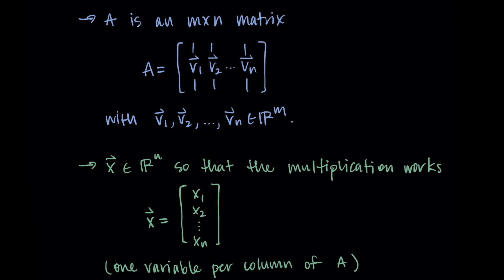So in a system of equations we have a certain number of variables and we put the coefficients of those variables in the columns. So that's why we need a vector that has the same number of entries as there are columns in the matrix A.